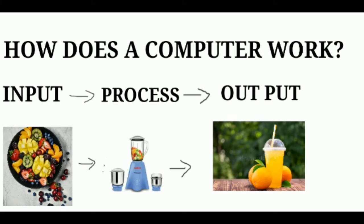How does a computer work? The data that is entered into the computer is called input. When the computer works on the input, it is called process. After processing, the result obtained is called output.